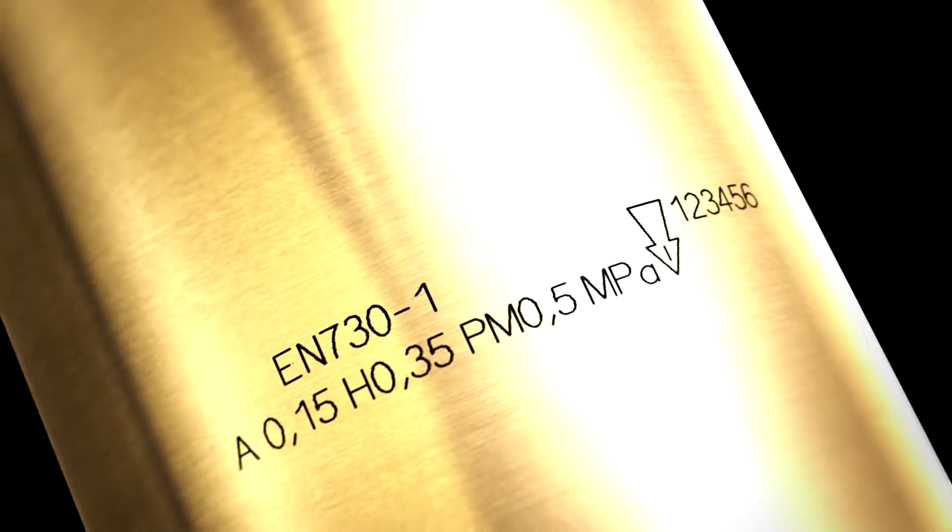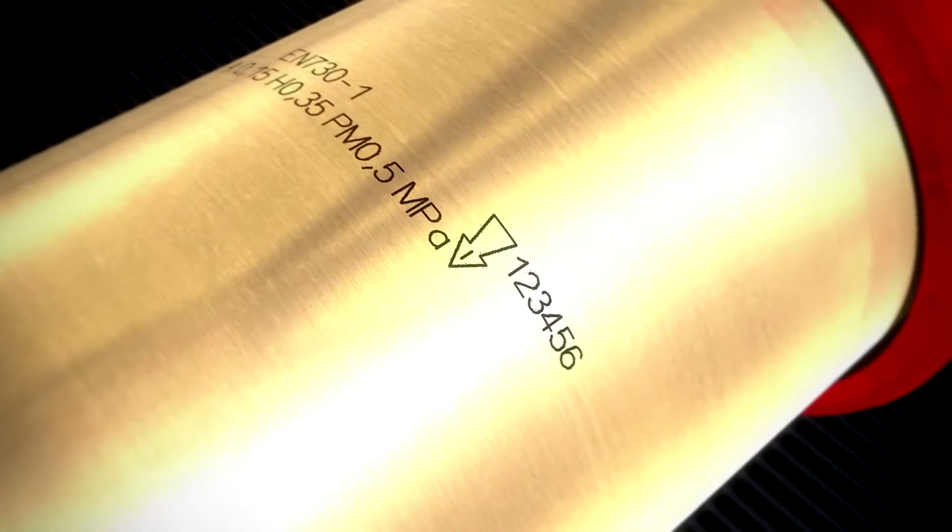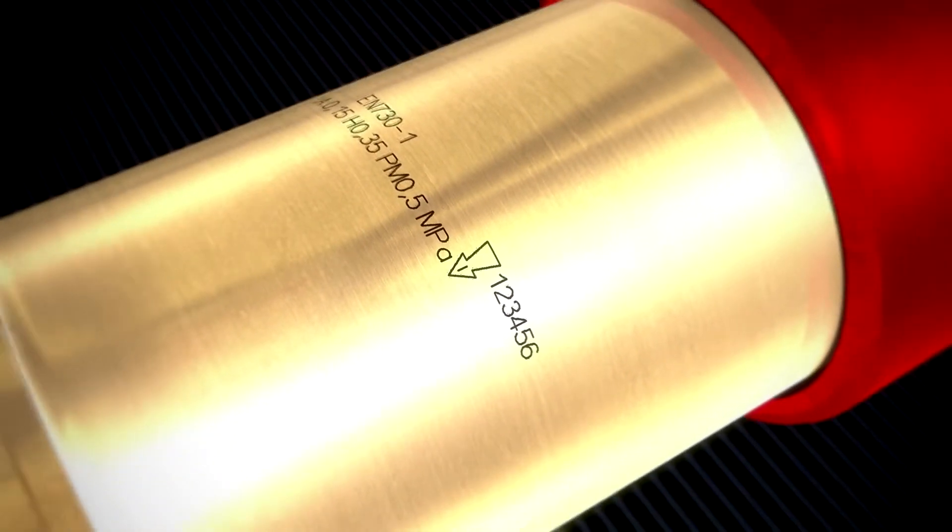After successfully passing all of the quality checks, the safety device will receive a permanent laser-engraved identification code in conformity with the norms. In addition, each safety device will be marked with a consecutive serial number to ensure traceability to the production order.